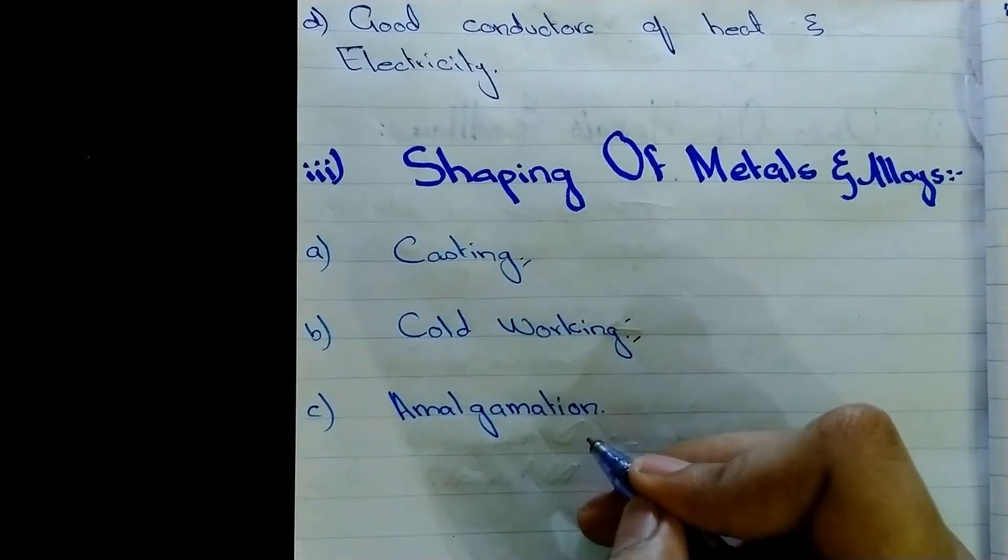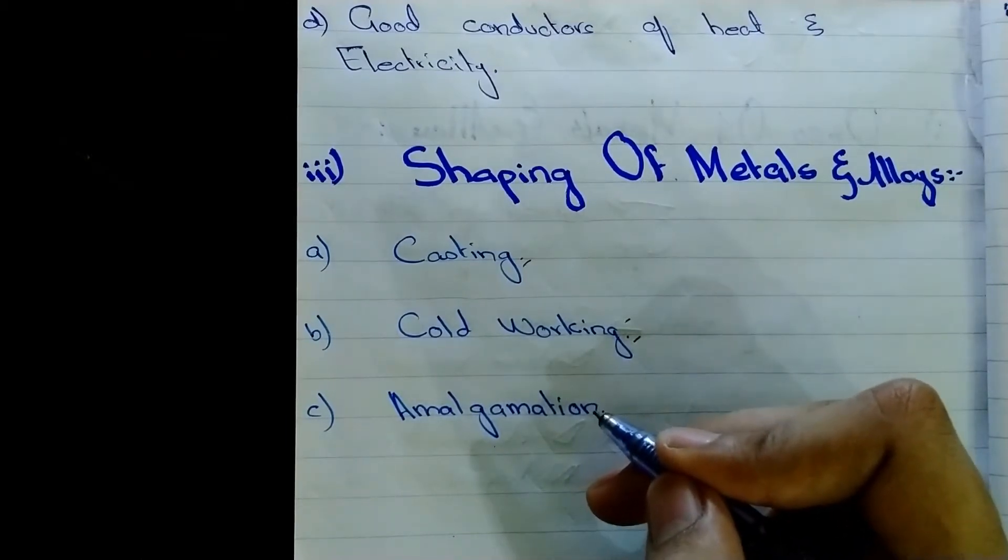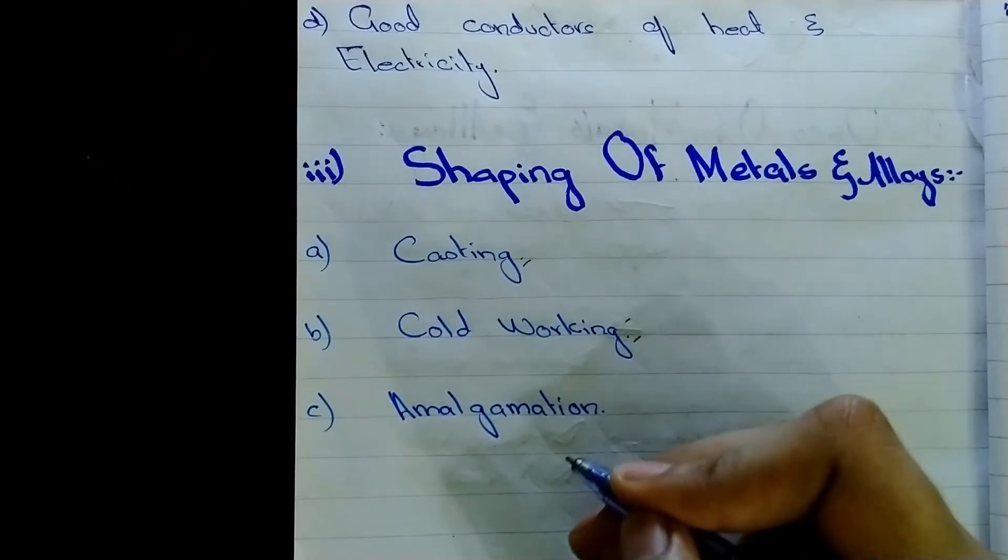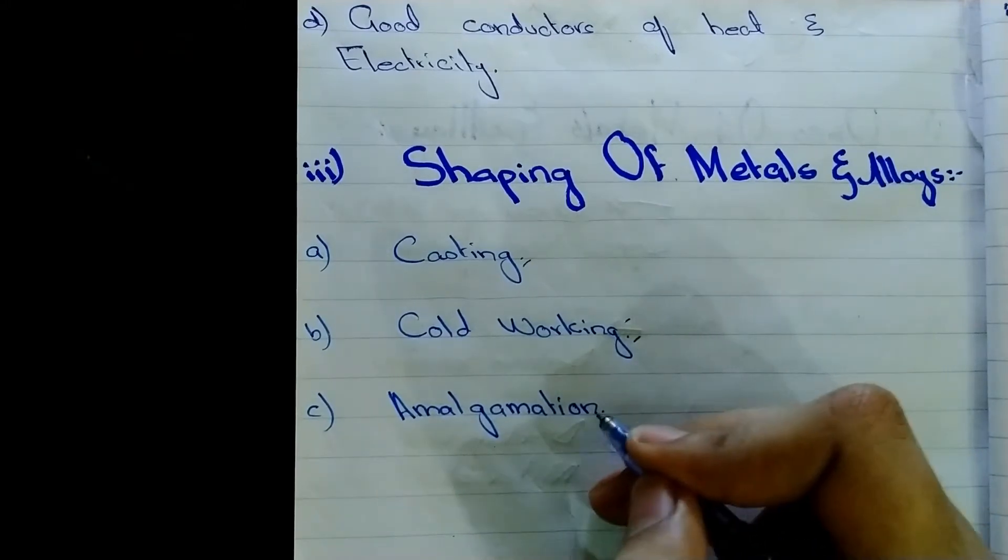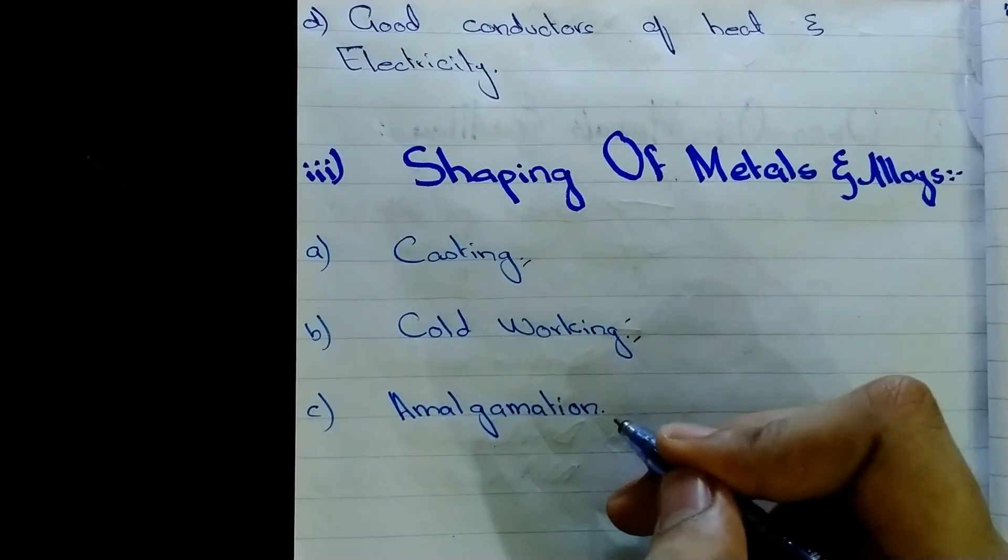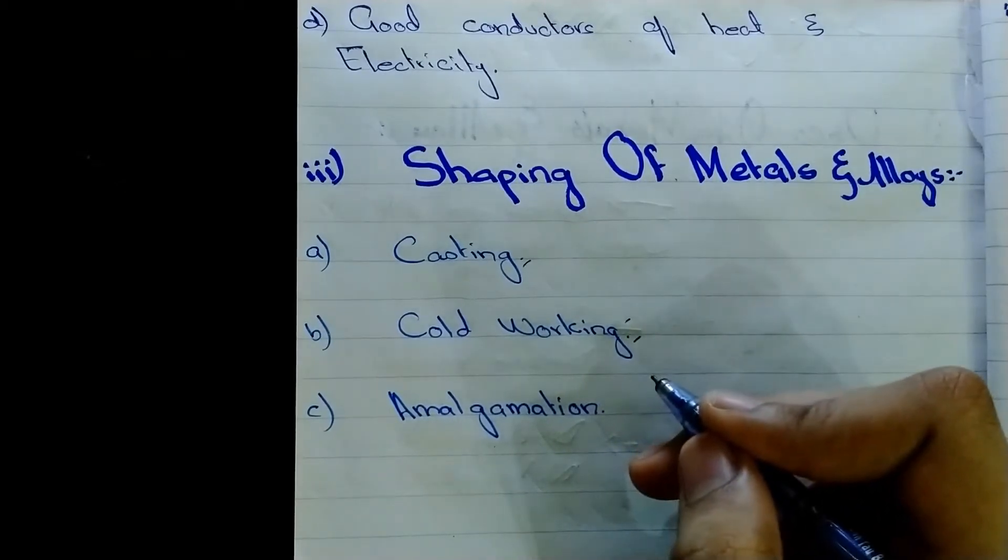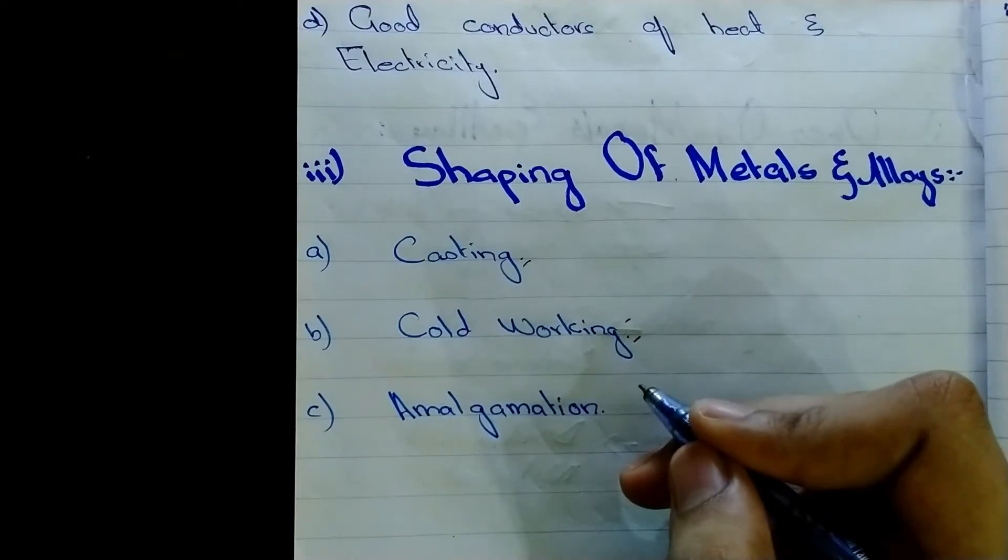And thirdly, the amalgamation. Some alloys are mixed with mercury to form a plastic mass. And then this mass hardens by a chemical reaction followed by crystallization. And this amalgamation is used in the dental amalgam filling materials.